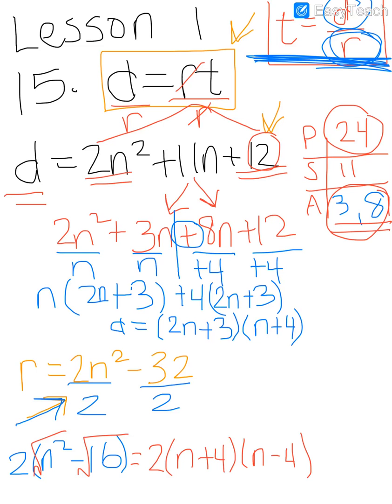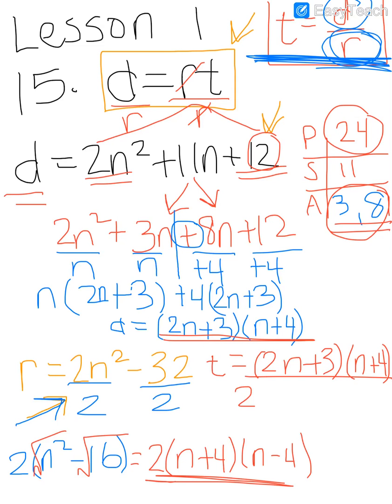Now that I have both the numerator and denominator factored, I'm going to write that equation. So t is equal to distance, which was this here. So 2n plus 3 over n plus 4. All over r, which was this down here. So 2 times n plus 4, n minus 4.